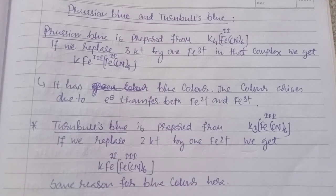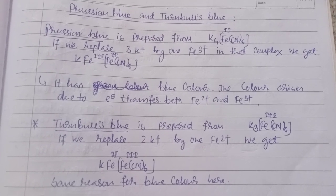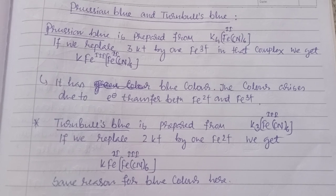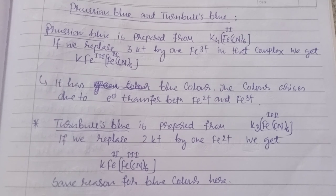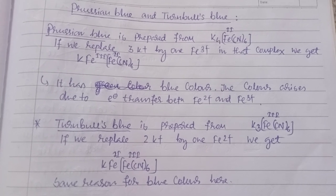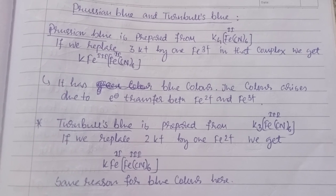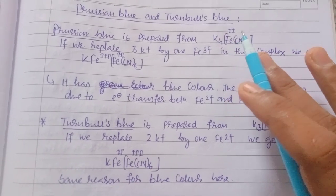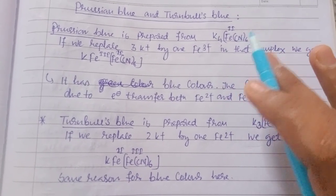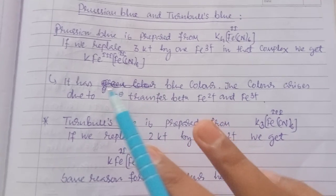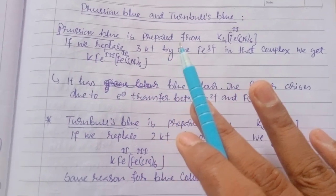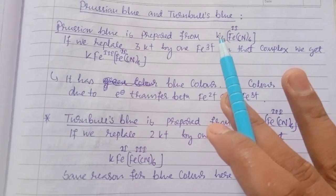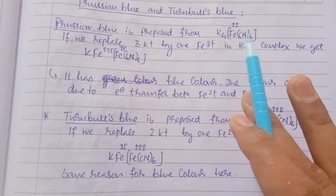In this video we will learn about Prussian Blue and Turnbull's Blue — what is the difference between them. Prussian Blue is prepared from K4[Fe(CN)6], which is potassium ferrocyanide. If we replace three potassium ions by one Fe3+ ion in that complex,